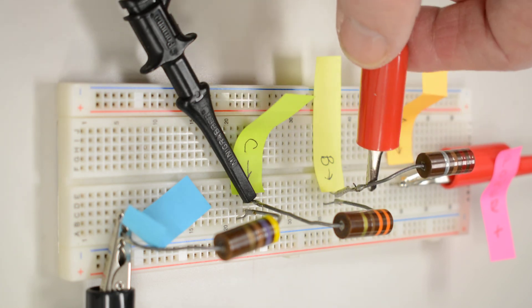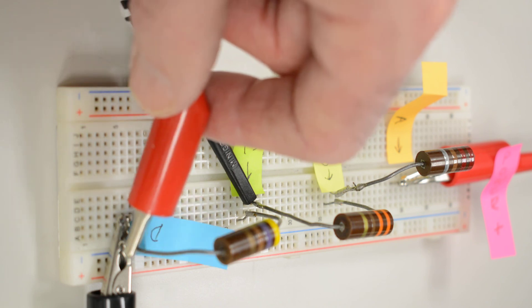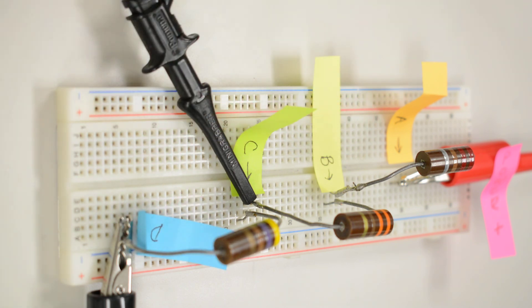So measure A to ground, B to ground, C to ground, and D to ground. So we go through those, and that's how we measure reference ground readings.